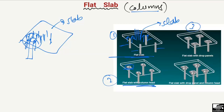The third type of flat slab is where we increase the size of the slab only in the vicinity of the column to avoid punching shear. We can see here the slab size has been increased near the column — such a flat slab is known as a flat slab with drop panel. The fourth type is the flat slab with drop panel and column head, where we provide both the column head and increase the slab size near the column. This combination is also used to avoid punching shear.